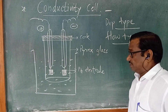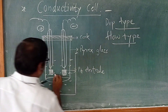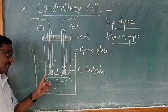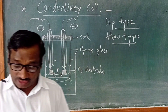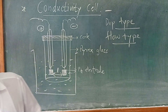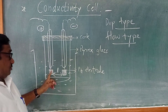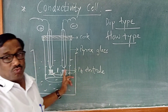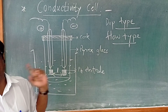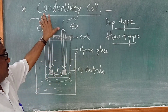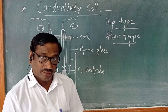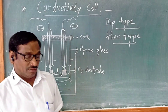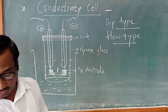This is the conductivity cell — very simple. The distance between the electrodes is kept constant. Mostly, L is 1 cm and the cross-sectional area is also 1 cm squared. So the cell constant, which is L divided by A, is 1 cm inverse. These — flow type and dip type — are the types of conductivity cells.